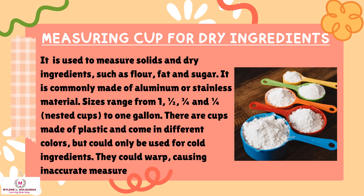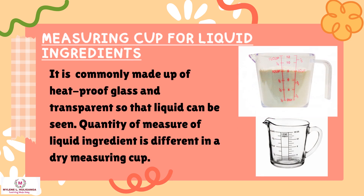Dry measuring cups are commonly made of aluminum or stainless steel material. Sizes range from one, one-half, three-quarters, and one-quarter nested cups up to one gallon. There are also cups made of plastic that come in different colors, but these can only be used for cold ingredients as they may warp, causing inaccurate measurements. The measuring cup for liquid ingredients is commonly made of heatproof glass and is transparent so that liquid can be seen. The quantity measured for liquid ingredients differs from that of a dry measuring cup.